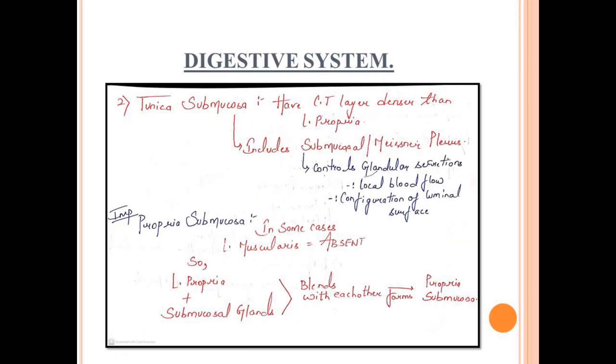Next layer is lamina muscularis, consisting of two to three layers of smooth muscles. Next layer is tunica submucosa, which has connective tissue layer denser than the lamina propria. It includes the submucosal mesenteric plexuses. The plexus function is to control the blood flow, glandular secretions, and configurations of the luminal surface.